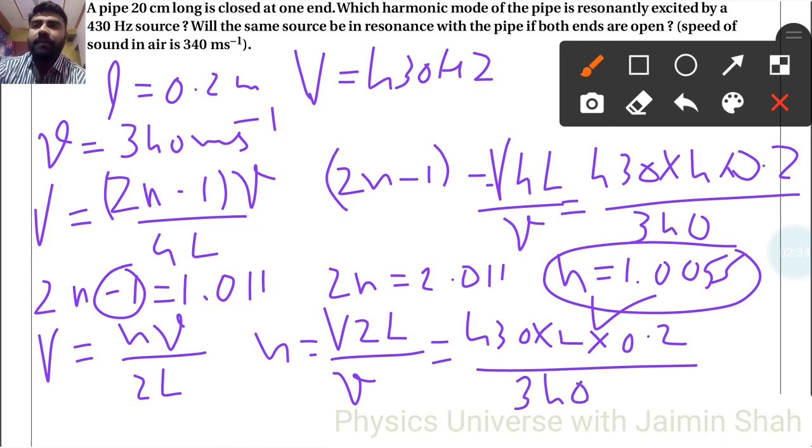So 430 into 2 into 0.2 upon 340, so that equals 0.505. So this N is not fixed, it is half. So here we can't get resonance if both ends are open, but we get resonance if one end is closed.